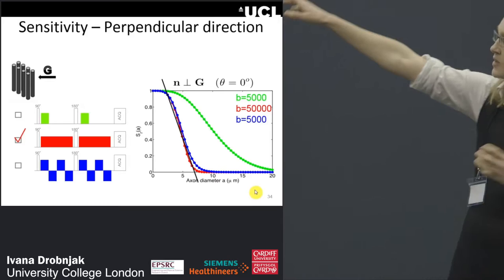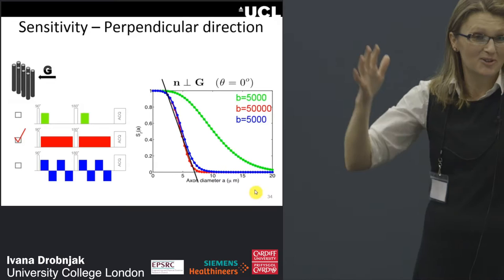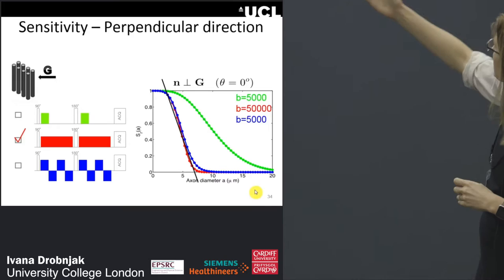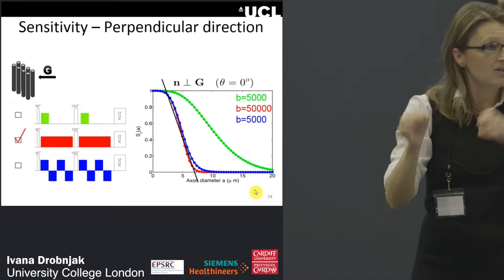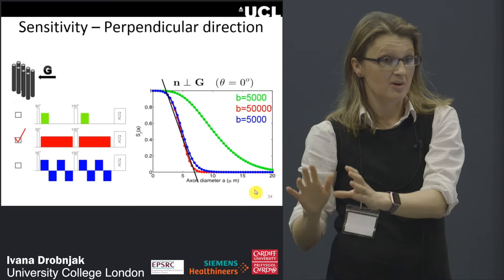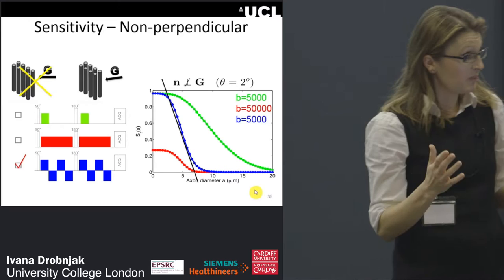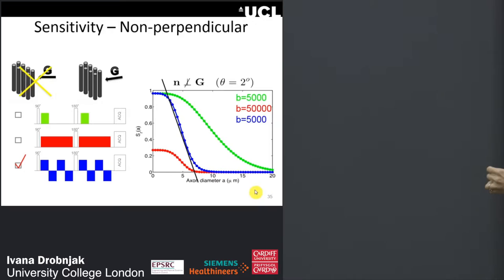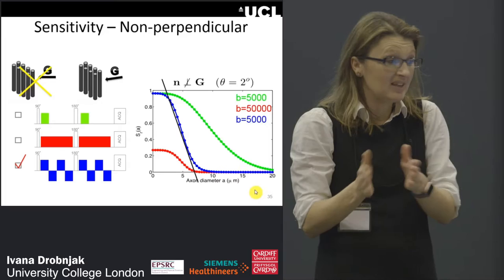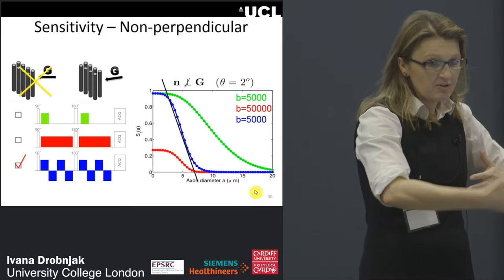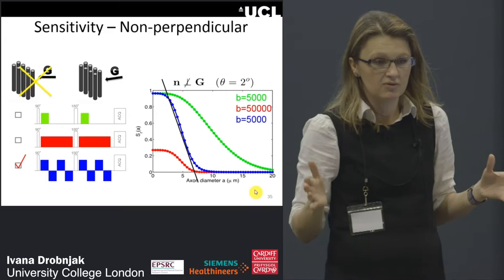Interestingly, the OGSE — which was essentially a four-lobe PGSE, not a very high-oscillating sequence — gave a very similar slope to PGSE but at a B value ten times lower. So we achieved the same sensitivity to axon diameter much more cheaply in terms of B value. This mattered crucially: with just a two-degree offset from the fiber direction, the PGSE with its massive B value dropped dramatically, while the OGSE with its much lower B value remained stable. OGSE thus offered a completely new, previously unrecognized benefit unrelated to temporal diffusion spectroscopy.